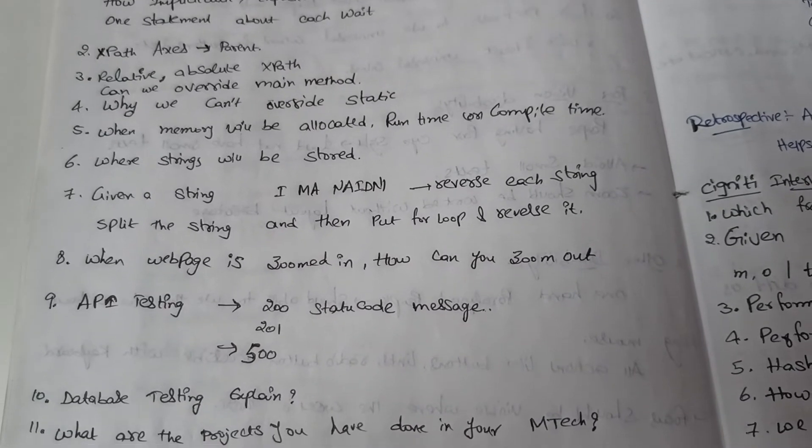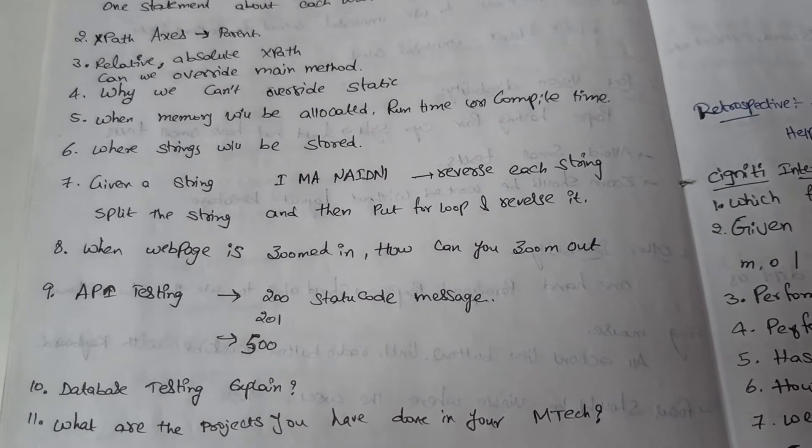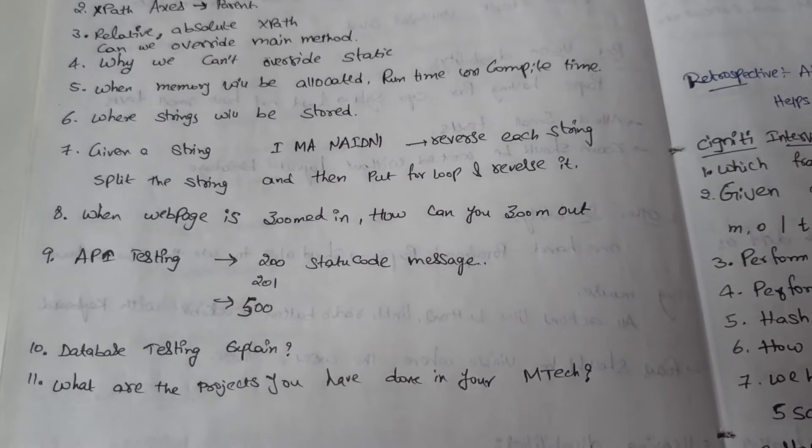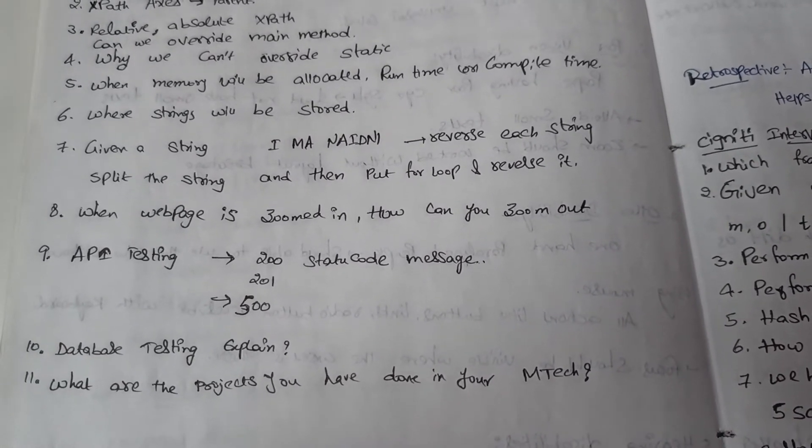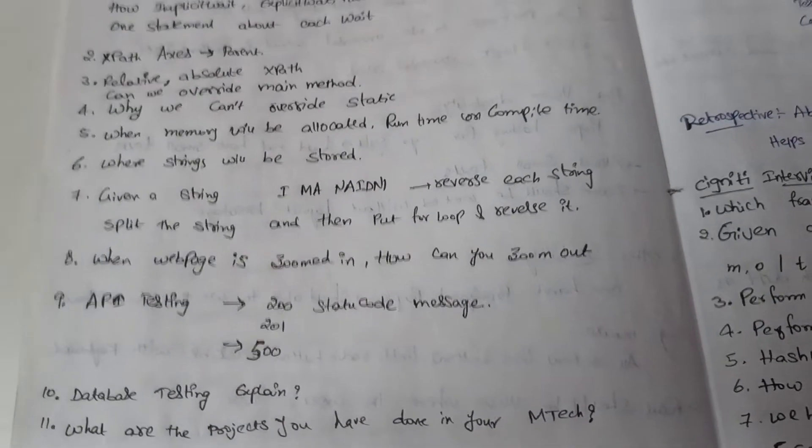Sixth one is where string will be stored. Seventh question is a given program. It's basically a statement given like I MA NA I DNA, so I have to write a program to make it as I am Indian.